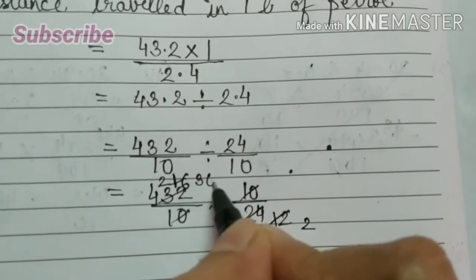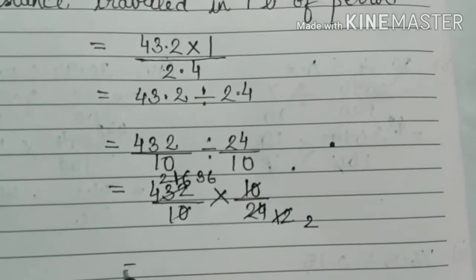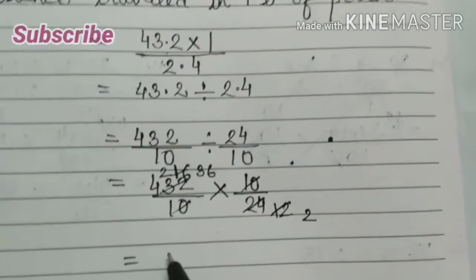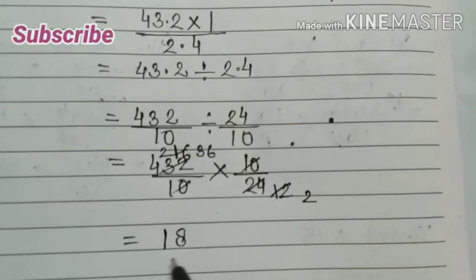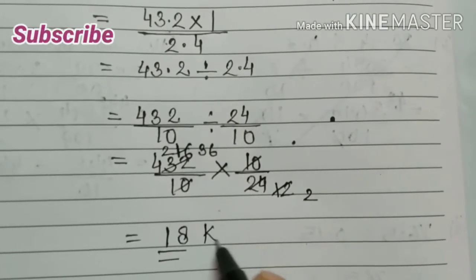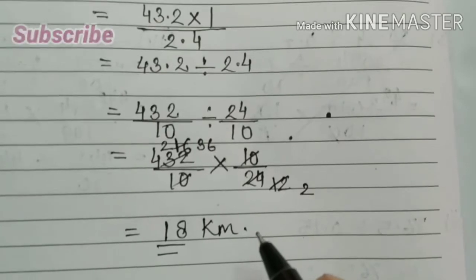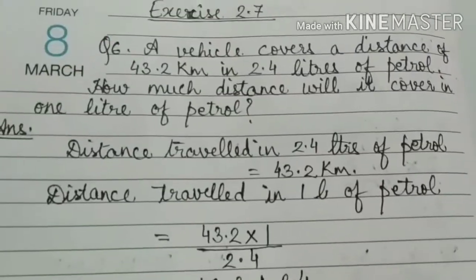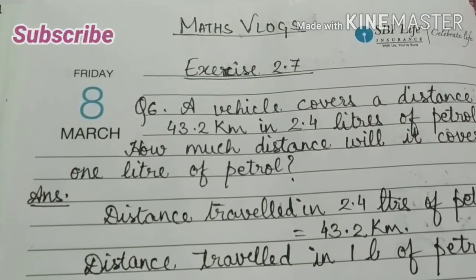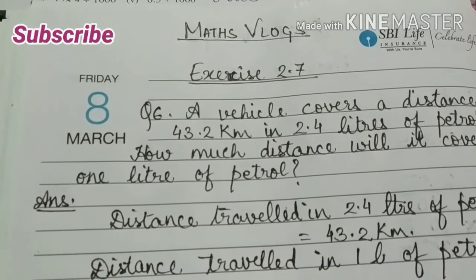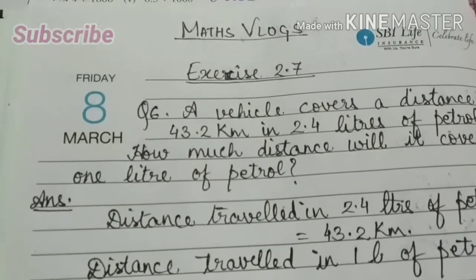Now again we can divide by 2, so we will get 18. So the answer is 18 kilometers. This question is finished and this chapter is also finished. Thanks for watching. Please like, share, and subscribe to my channel.